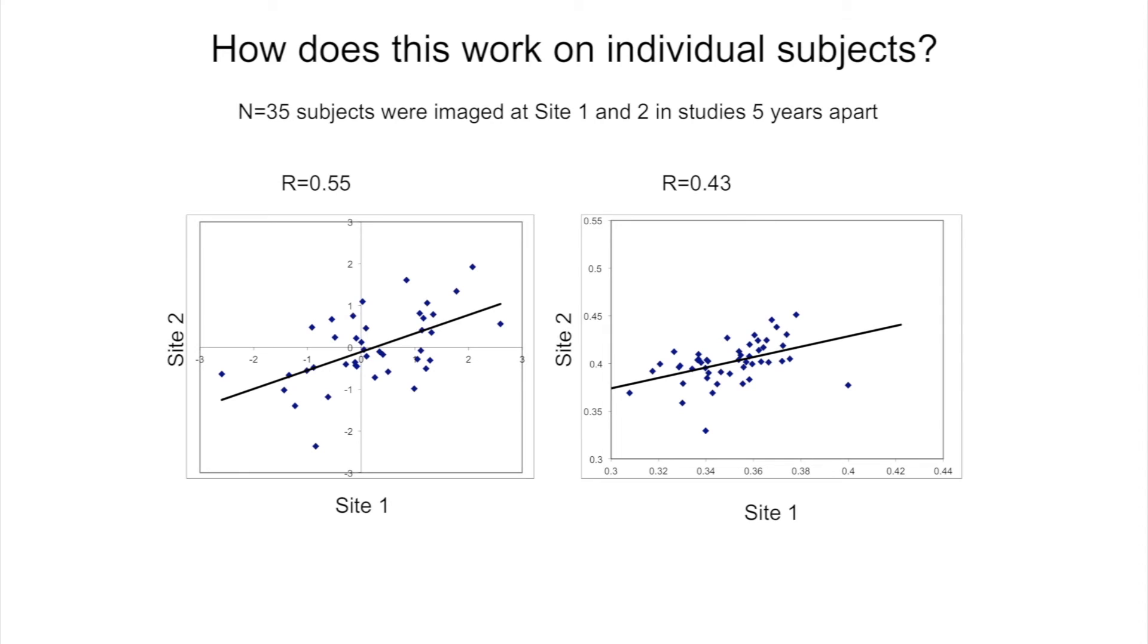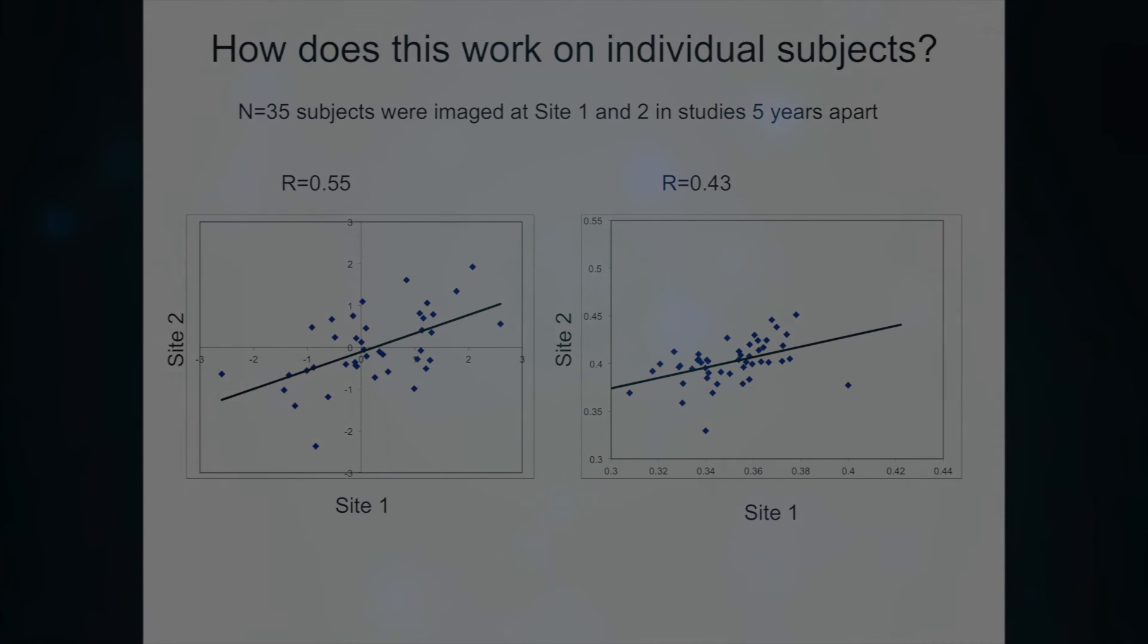And as I said, we had some overlap among sites. And so 35 subjects were imaged at site one and two in studies. And those studies were done five years apart. And here you can see that the comparison between subjects was done following mega normalization versus just plotting FA1 versus FA2. And while there is no significant difference in R-squares, I personally like the one for the mega a little bit better because the normal transformation pulls the data slightly together.